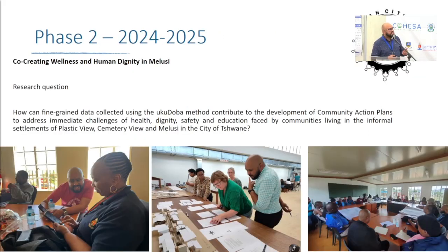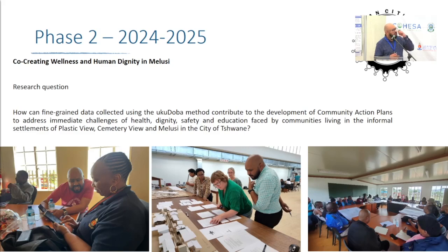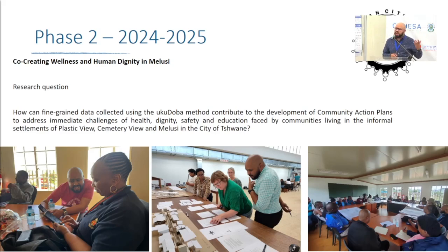Moving on to phase two, we're within the communities themselves — they're actually in the field this week, so unfortunately I can't be there. With the architecture department, we're discussing with the communities, looking at different questionnaires, having community meetings to share some of the results, and saying: we are finding this in the community. How can we co-create some of these interventions? What would work? What would not work? What is sustainable short-term and long-term? Is it needs? Is it education, gaps, or skills?